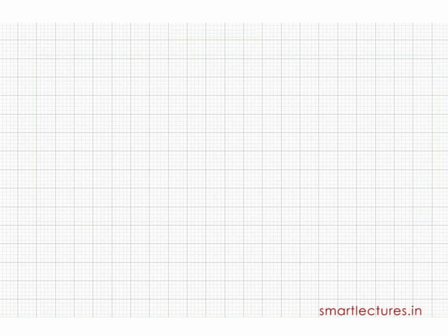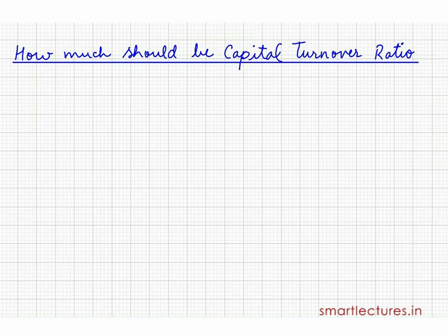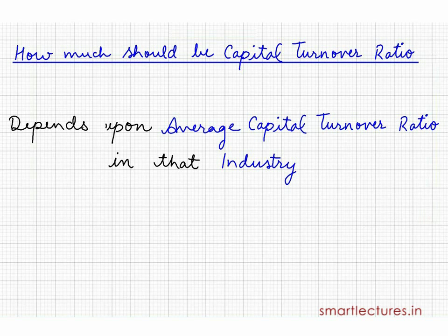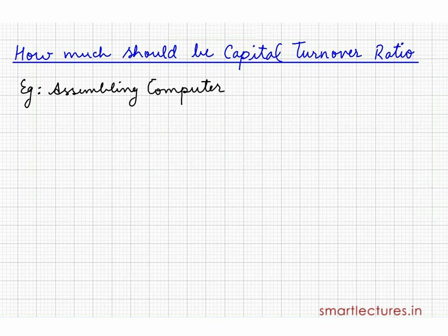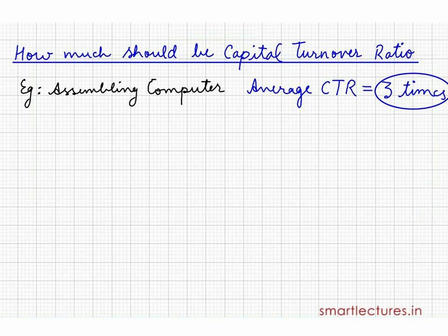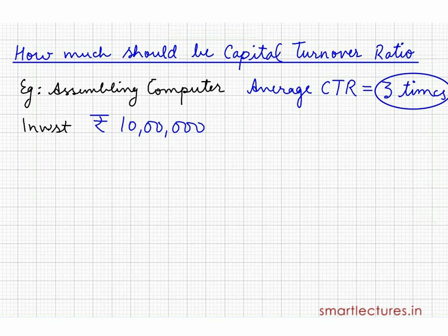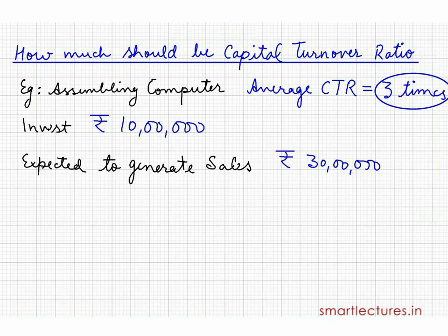Now the question is: how much should the capital turnover ratio be? We can't specify whether 3 times is the best, or 4 times, or 5 times. It always depends upon the average capital turnover ratio in that industry. Suppose you are assembling computers and in that industry the average capital turnover ratio is 3 times. If you invest 10 lakh rupees, you are expected to generate sales of at least 30 lakhs.